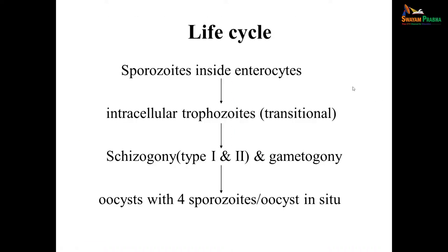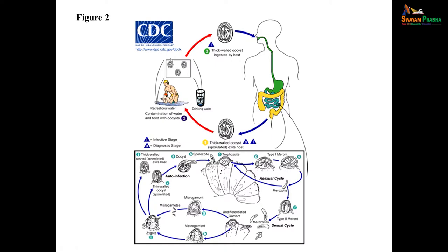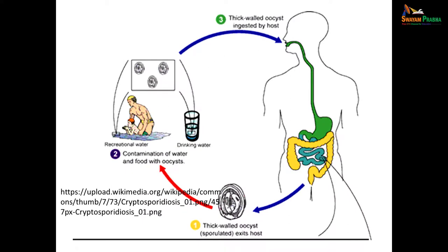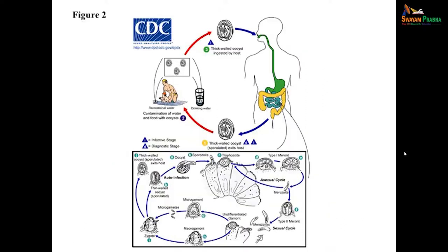In the life cycle, a sporozoite enters intestinal cells, goes on to form trophozoites, then schizogony type 1 and type 2. Gametes are formed, a zygote forms, and finally oocysts are released with four sporozoites. Contaminated food or water containing oocysts is ingested and the thick-walled oocyst goes to the intestine. In the intestinal cell it multiplies, undergoes schizogony and merogony — both asexual cycle with type 1 and type 2 meronts — then gametes form, a zygote forms through sexual reproduction, and two oocysts are released. Thin-walled oocysts cause autoinfection, while thick-walled oocysts are excreted outside and are the infective form.